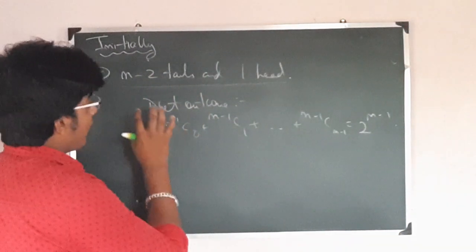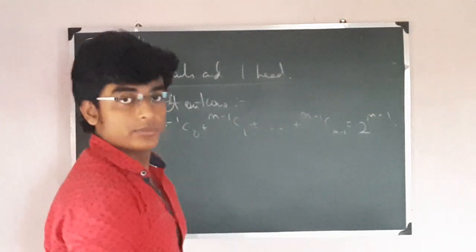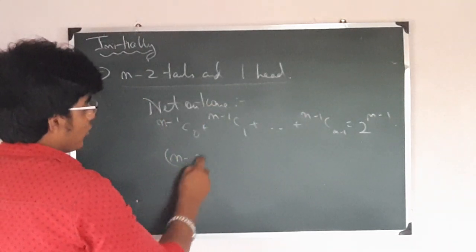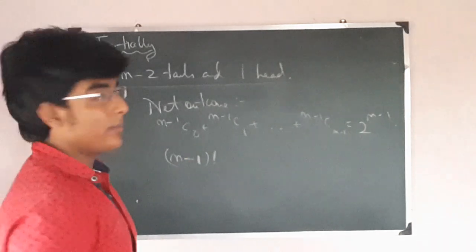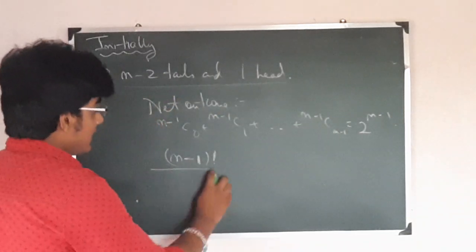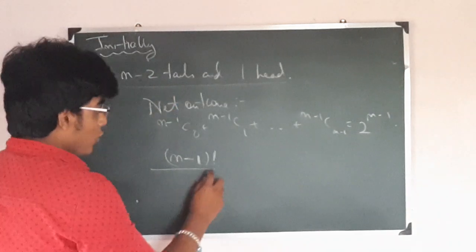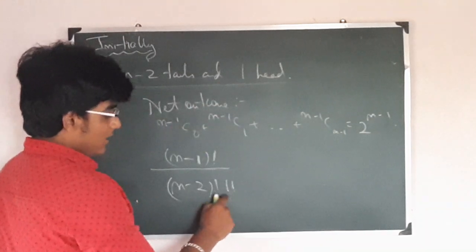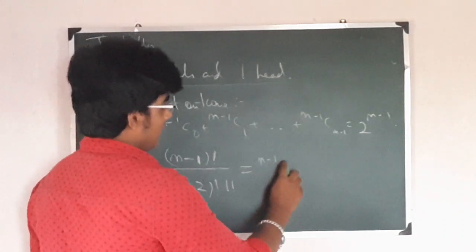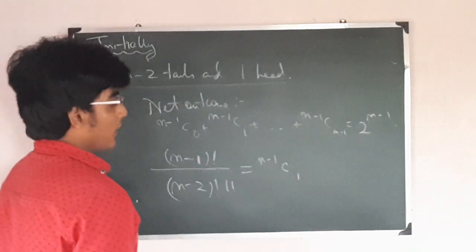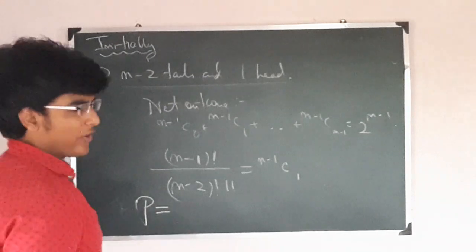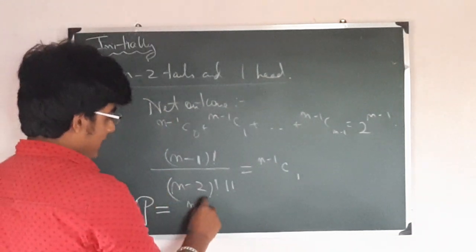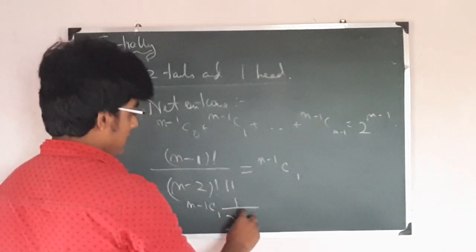The probable outcome is N minus 1 factorial divided by N minus 2 factorial (for the repeating tails) and 1 factorial (for the one head), which is nothing but (N-1)C1. So the probability here is (N-1)C1 times 1 upon 2^(N-1).